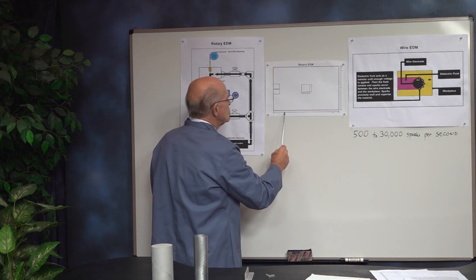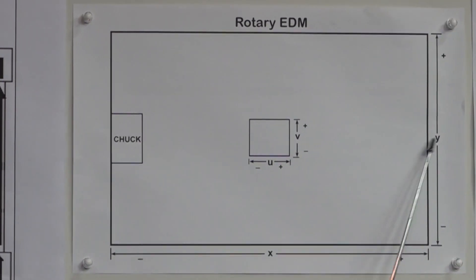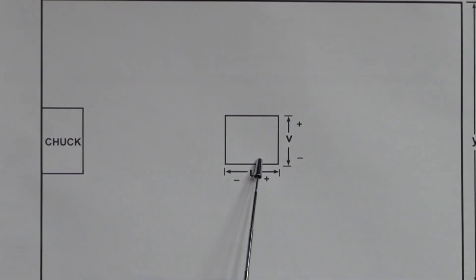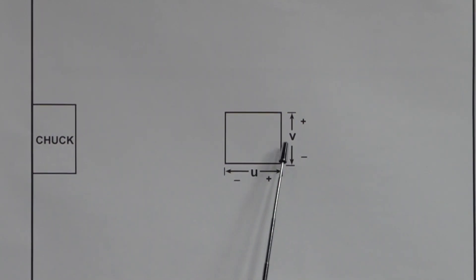Here is, the table moves this way, in the X plus and minus, on the Y plus or minus. And this UV, the top head also moves in the UV plus minus, and the V plus minus.